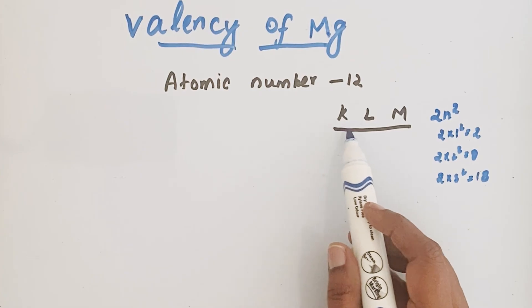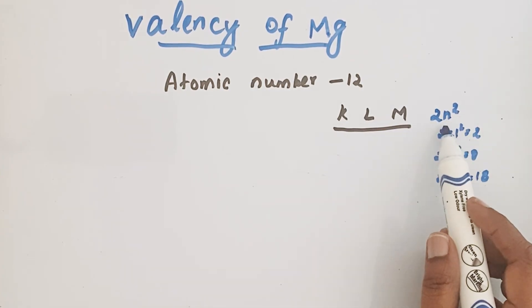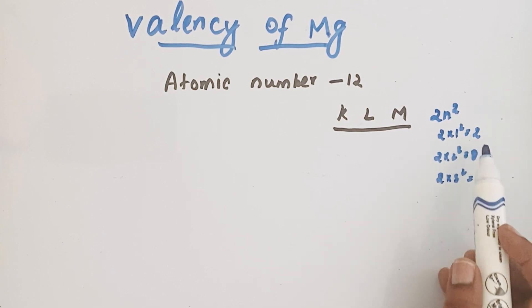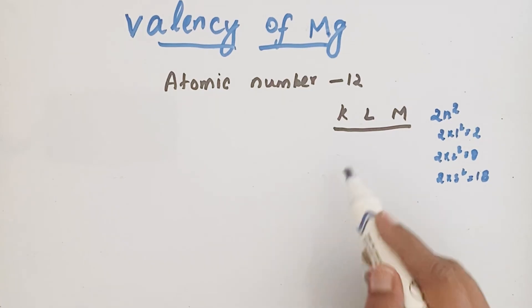Here we have KLM. Using the formula 2N square we can find the maximum number of electrons. For the first shell the maximum number of electrons is 2, for the second shell 8, and for the third one 18 electrons.